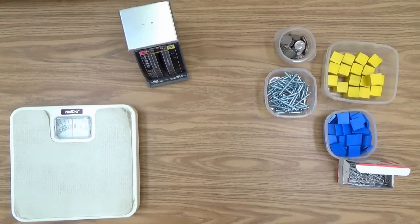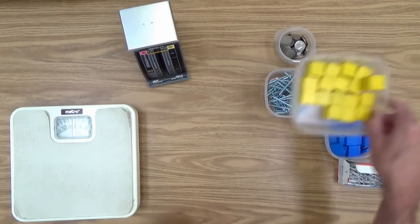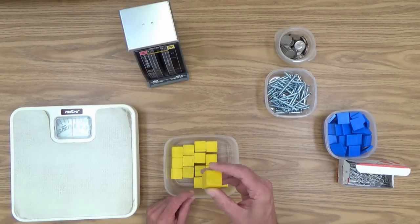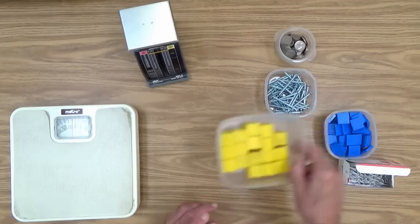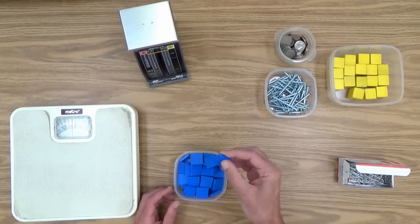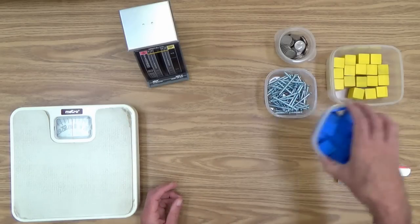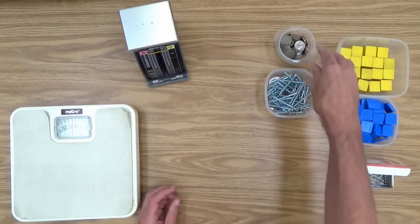So later on in the lesson, you'll see the bucket balance. We need small objects of uniform weight, small identical objects. For example, color cubes, which we've used, wooden color cubes. Here's some plastic color tiles. Of course, all exactly the same. They should weigh more or less exactly the same.